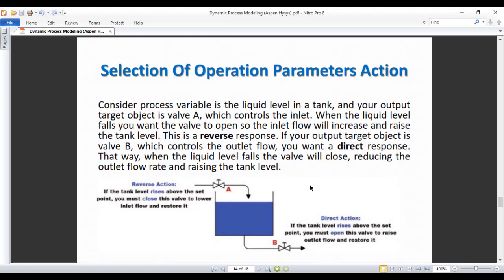Selection of operation parameter action. Consider process variable is the liquid level in a tank and your output target object is valve A, which controls the inlet. When the liquid level falls, you want the valve to open so that the inlet flow will increase and raise the tank level. This is a reverse response.